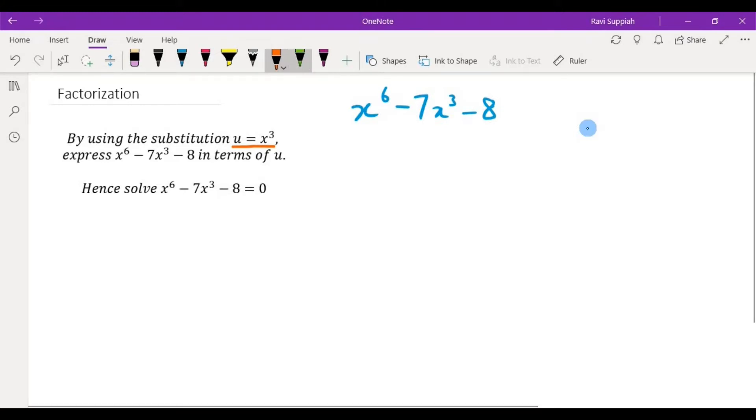The indices rule that we are going to use is a^m to the power of n is a^(m times n). So x to the power of 6 can be written as x to the power of 3 bracket 2. 3 times 2 will be 6. So that is what I'm going to be writing over here: x cubed whole thing squared minus 7x cubed minus 8.